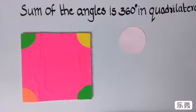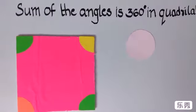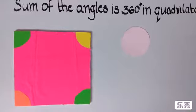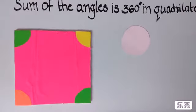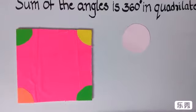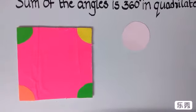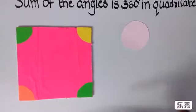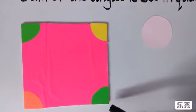Hi, today's concept is the sum of the angles is 360 degrees in a quadrilateral. What is meant by quadrilateral? A quadrilateral is a polygon with four edges or four vertices. See here, we can observe a square which is a quadrilateral as it has four vertices and four edges.